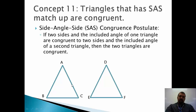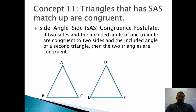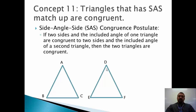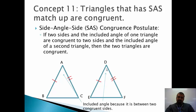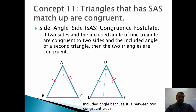Two sides and an included angle. If I have segment AB and segment AC, the included angle of those two segments would be Angle A, because segment AB and segment AC form Angle A — it's between the two sides. Same thing over here: if I had segment DE and segment DF, then Angle D would be the included angle because it's between the two segments. If those are all congruent, I have Side, Angle, Side matching up, and these two triangles have to be congruent.